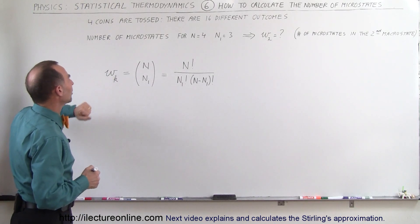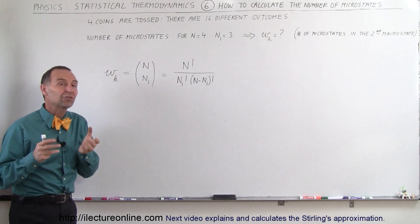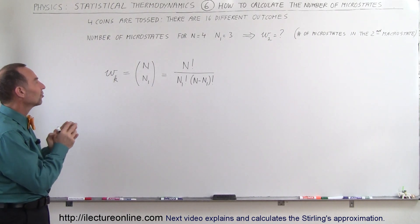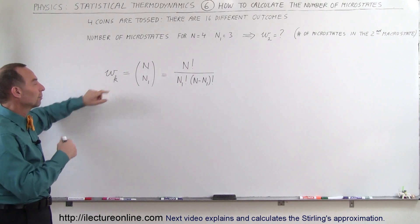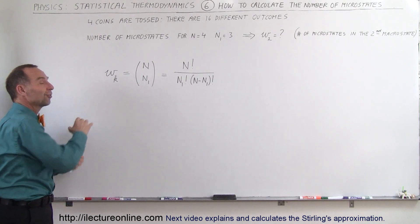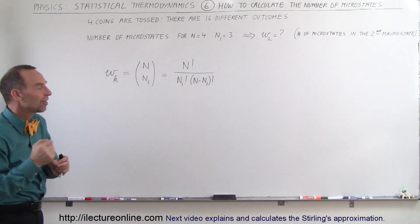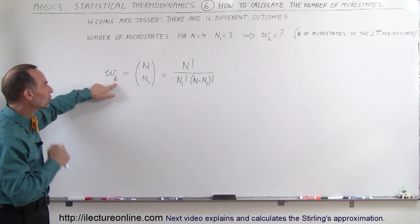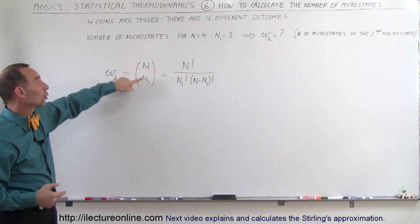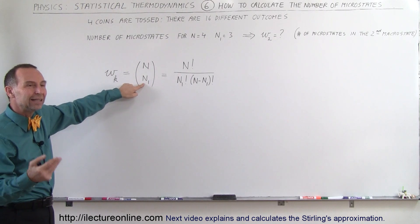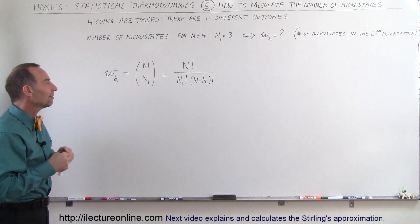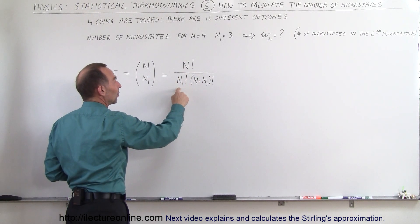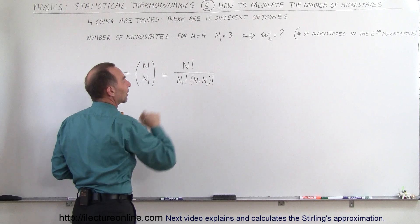Here's the general equation. W sub k — W represents the number of microstates, and k represents which microstate we're dealing with. In this case we want k to be 2. N is the number of entities — four coins. N sub 1 is the number of entities that have heads in that particular microstate.